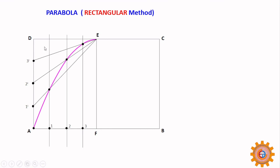You can simply replicate, or otherwise you can draw horizontal lines at the same distance. The same distance you can keep on the other side. This distance and this distance will have the same point.